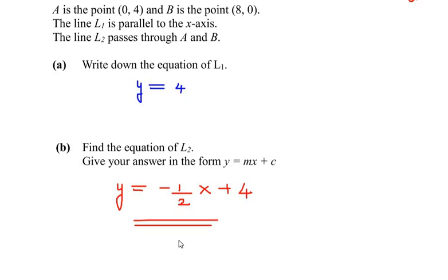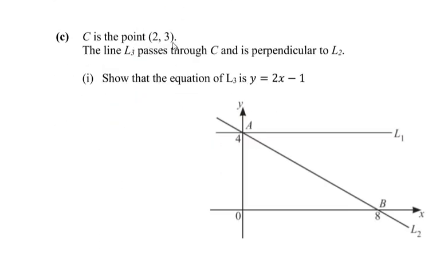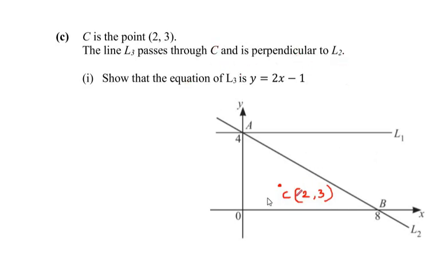Now let us look at the next part of this question. C is the point (2,3). The line L3 passes through C and is perpendicular to L2. We need to show that the equation of L3 is y = 2x - 1. Let us mark point C at (2,3) and draw line L3 passing through C and perpendicular to L2.